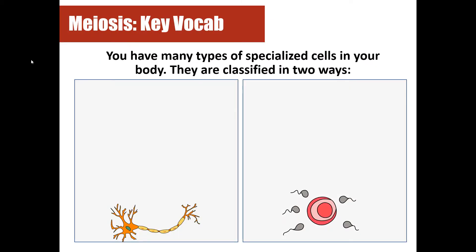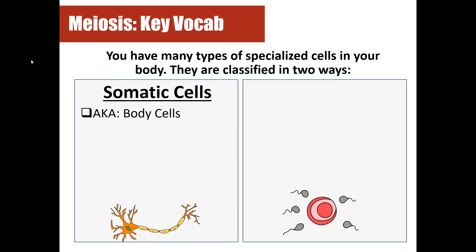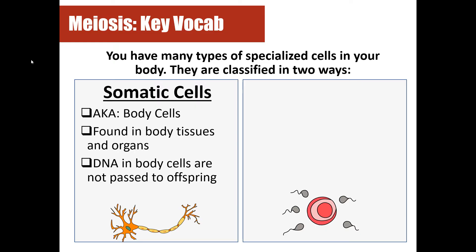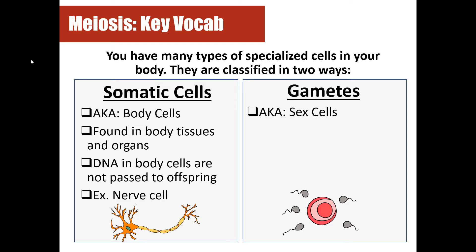The first thing you need to know is that there are many different types of specialized cells in your body, and we can classify those in two ways. You have somatic cells, which are also called body cells — these are like your nerve cells, your skin cells, your blood cells. Then you also have gametes, and gametes are an organism's reproductive cells, so they're also called sex cells. Female gametes are called ova or eggs, and male gametes are called sperm.